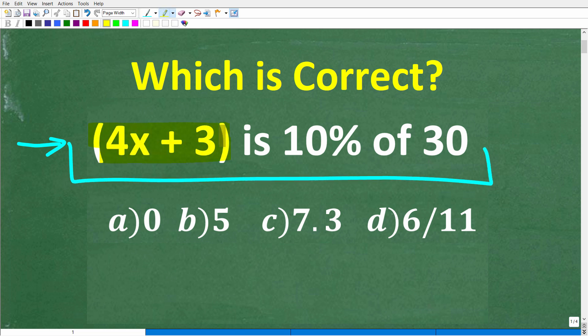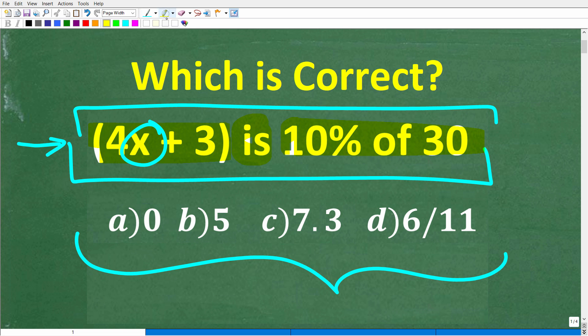We have 4x plus 3 is 10% of 30, and we're trying to determine the value of x such that this statement here is true. Now, this is a multiple-choice question, and let's take a look at our answers. So A is 0, B is 5, C is 7.3, and D is 6 over 11.